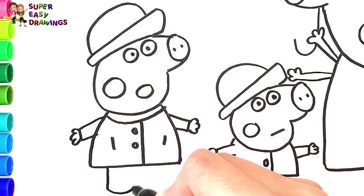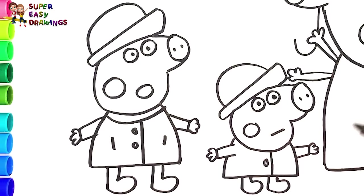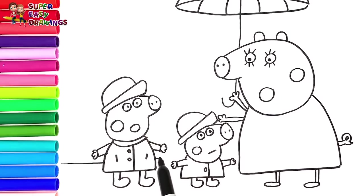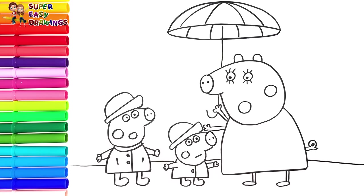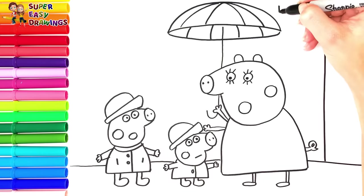I draw her legs. She is wearing boots, too. Now I draw the ground and also a door behind Mommy Pig.